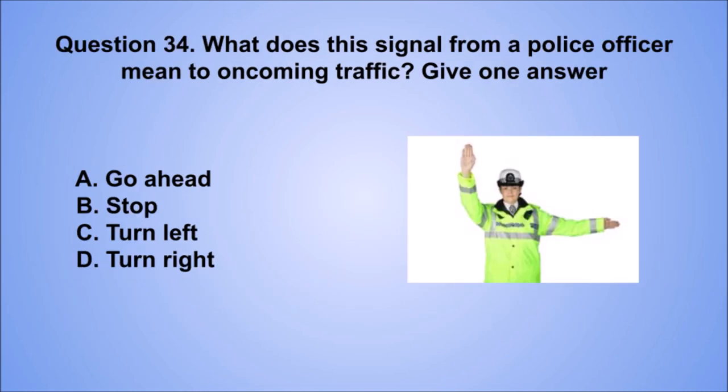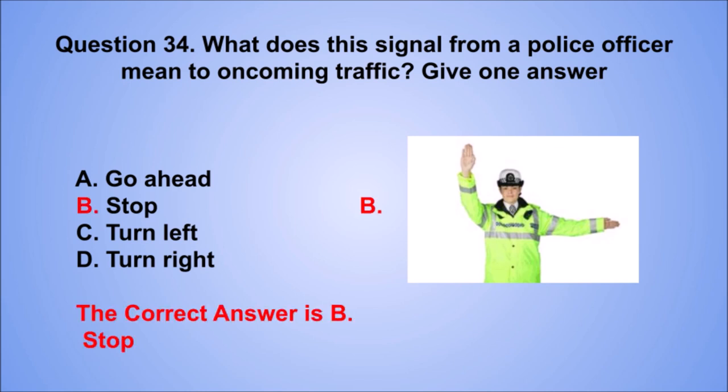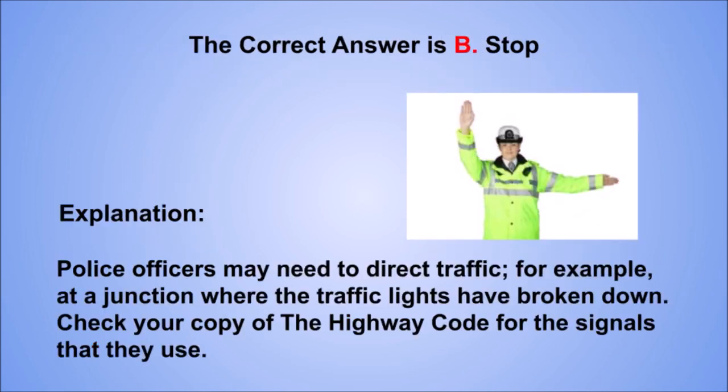Question 34. What does this signal from a police officer mean to oncoming traffic? Give one answer. A. Go ahead. B. Stop. C. Turn left. D. Turn right. The correct answer is B, stop. Police officers may need to direct traffic, for example, at a junction where the traffic lights have broken down. Check your copy of the Highway Code for the signals that they use.